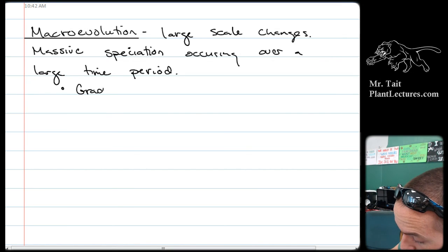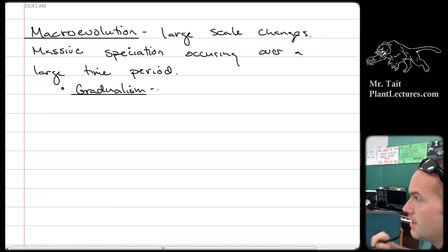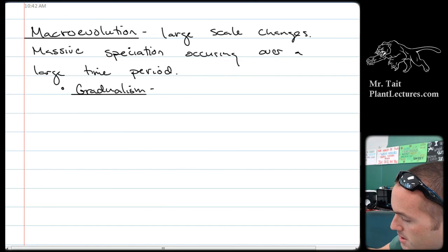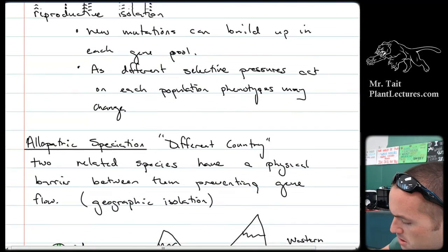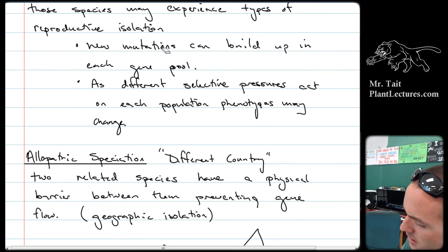The first one's called gradualism, and I know we've already talked about it, but bear with me because I want to talk about how it relates to what we've been discussing. Gradualism is the type that makes sense to us based on the last couple days of notes. So, for instance, like yesterday, we talked about the fact that new mutations would just build up in a gene pool.